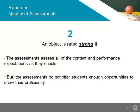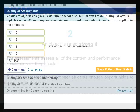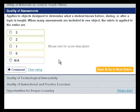If the assessments assess all of the content and performance expectations as they should, but the assessment modes used do not offer students enough opportunities to show their proficiency, an object is strong and given a 2 rating.